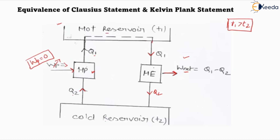Now consider the heat engine. This is a cyclic heat engine which transfers heat from the hot reservoir to the cold reservoir by producing some net work in one cycle. This complete cycle includes: heat Q1 taken from the hot reservoir, net work done by the system, and then transfer of Q2 to the lower temperature reservoir.